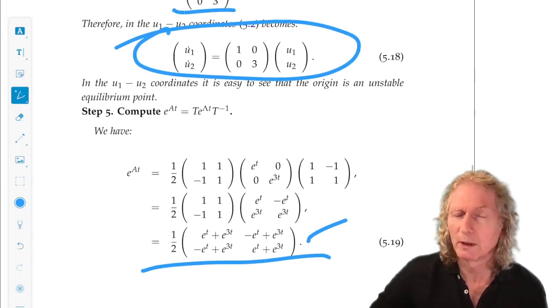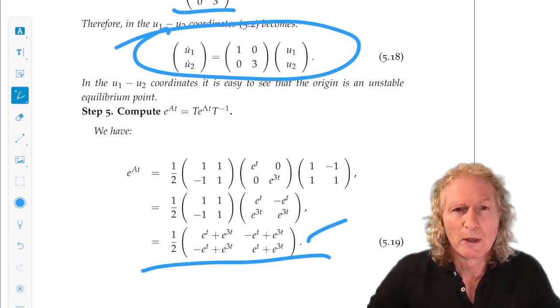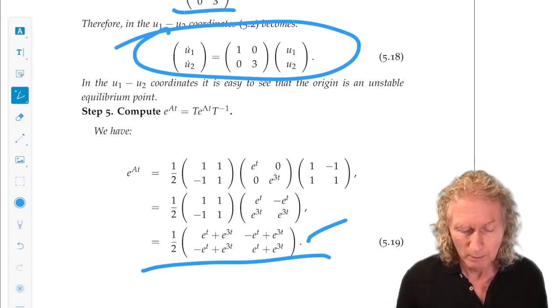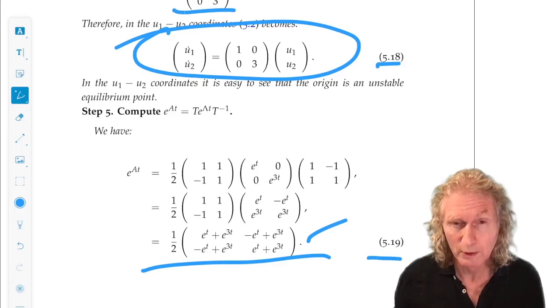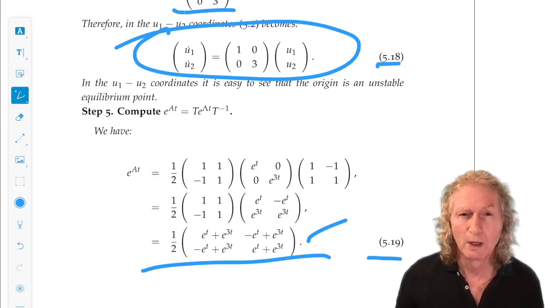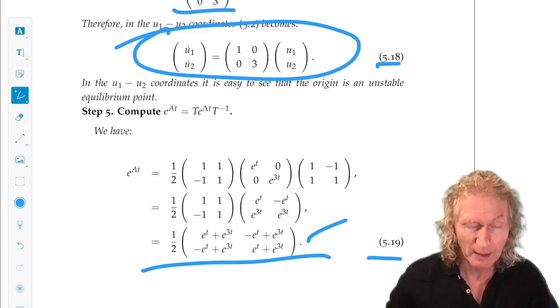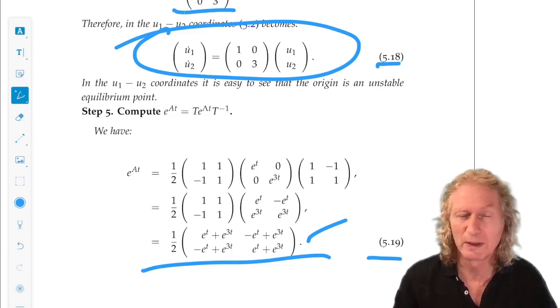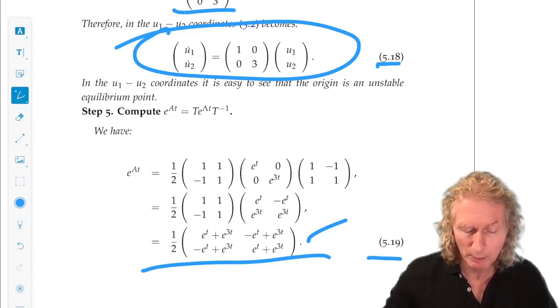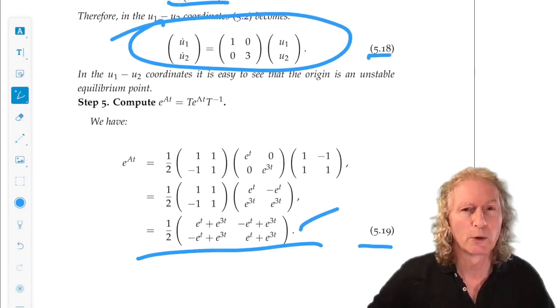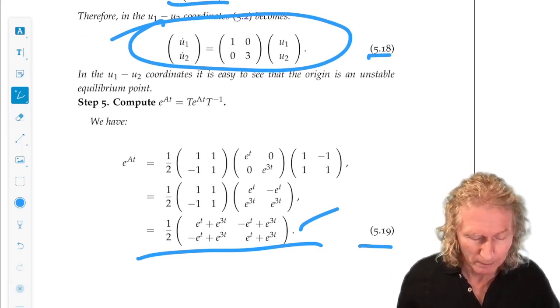And that's a general fact, because the transformation between the eigencoordinates and the original coordinates, the coordinates in which this system was presented to us, is a differentiable, it's a linear and invertible coordinate system. And that does not change stability. That's something that needs to be checked, but it is true. And the coordinate change doesn't depend upon time.